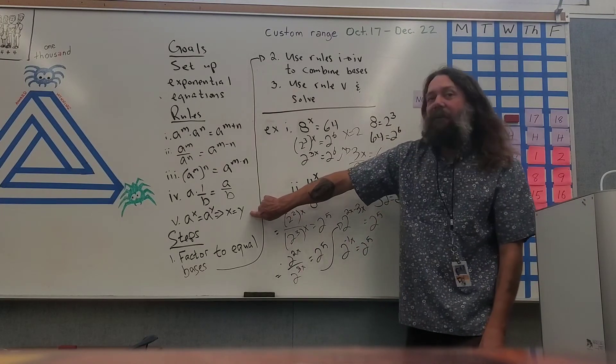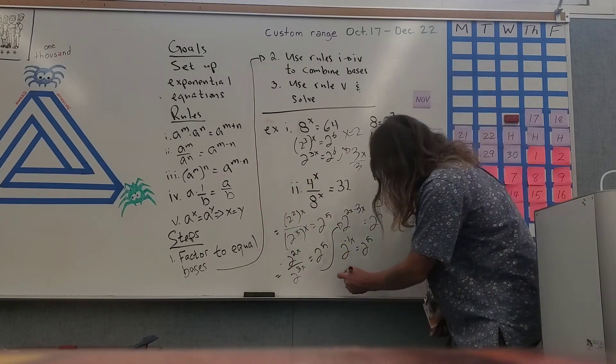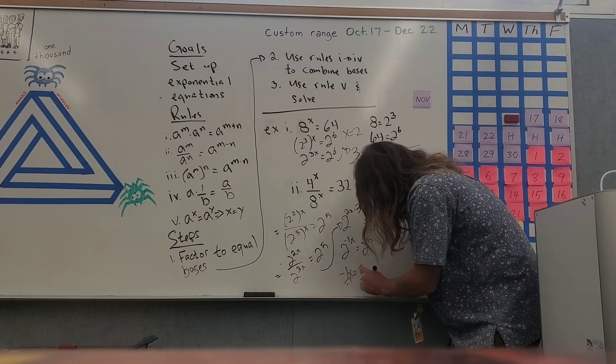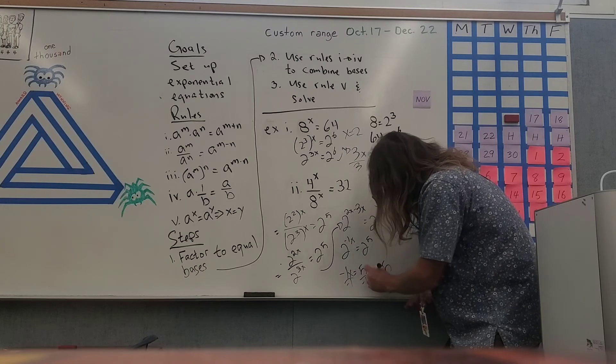I've now got to step five, and so now I can use step five, or rule five, and I get negative one x is equal to five. Divide out that negative one, and I get x is equal to negative five.